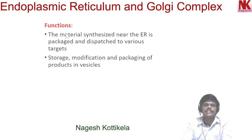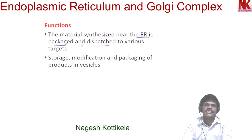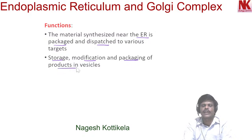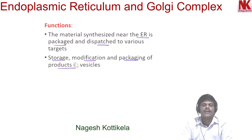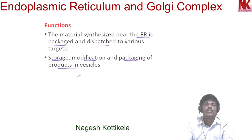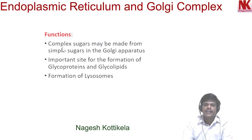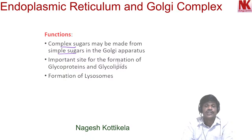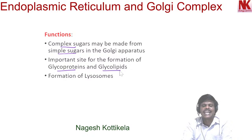The functions of Golgi apparatus: the material synthesized near the endoplasmic reticulum is packaged and dispatched to various targets inside and outside the cell through the Golgi apparatus. Storage, modification, and packaging of products in vesicles is the function of Golgi apparatus. Complex sugars may be made from simple sugars in the Golgi apparatus — it is an important site for the formation of glycoproteins and glycolipids.